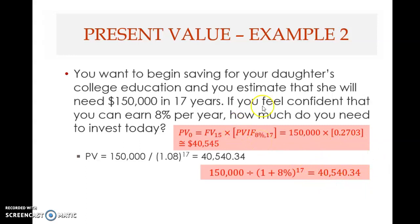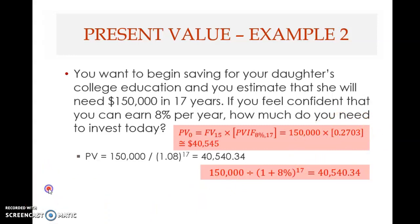Therefore, it is always best to use the formula rather than the table. The table can be used as a means to check your answer. A better method of checking is to take the present value you got — $40,540.34 — and multiply it by (1 + 8%) raised to the power of 17. You should get $150,000. If you get that answer, then your answer is correct. It's always good practice to test your answer.